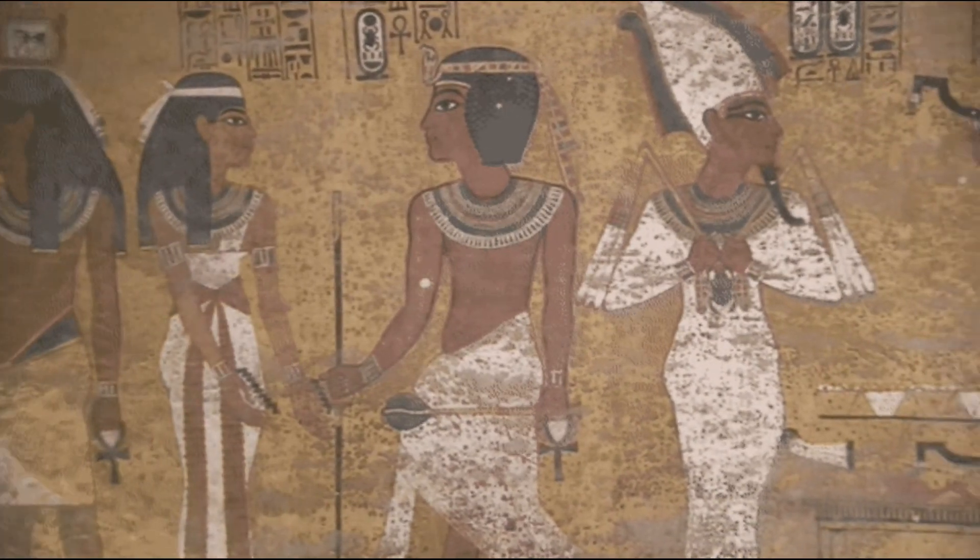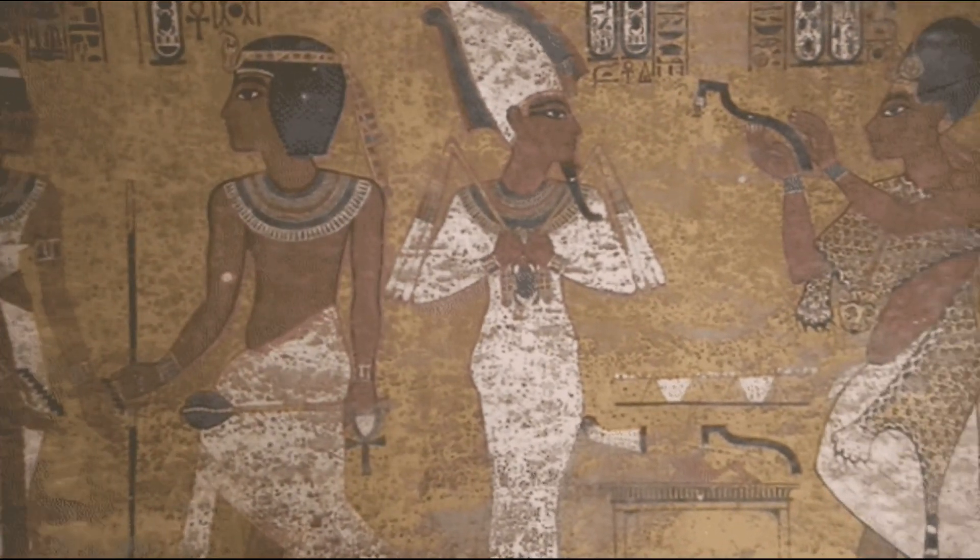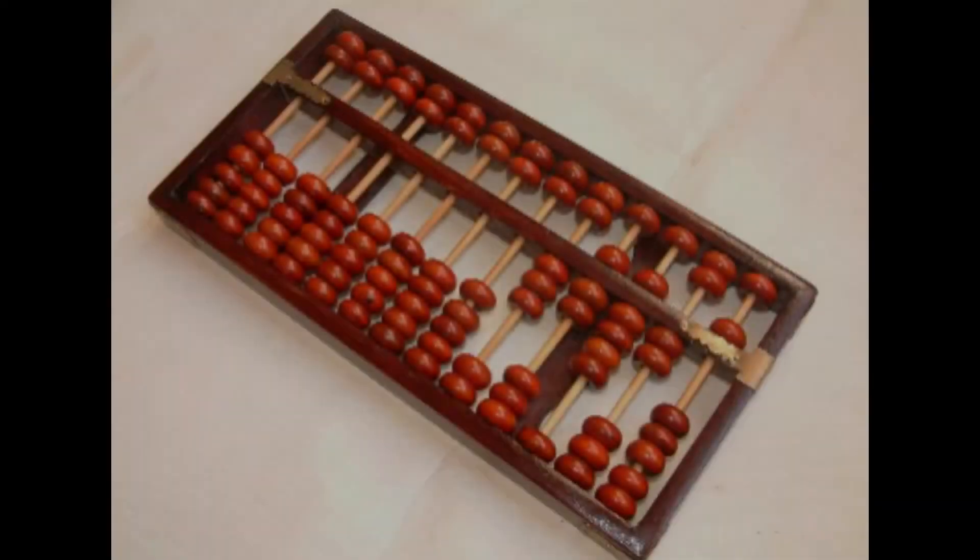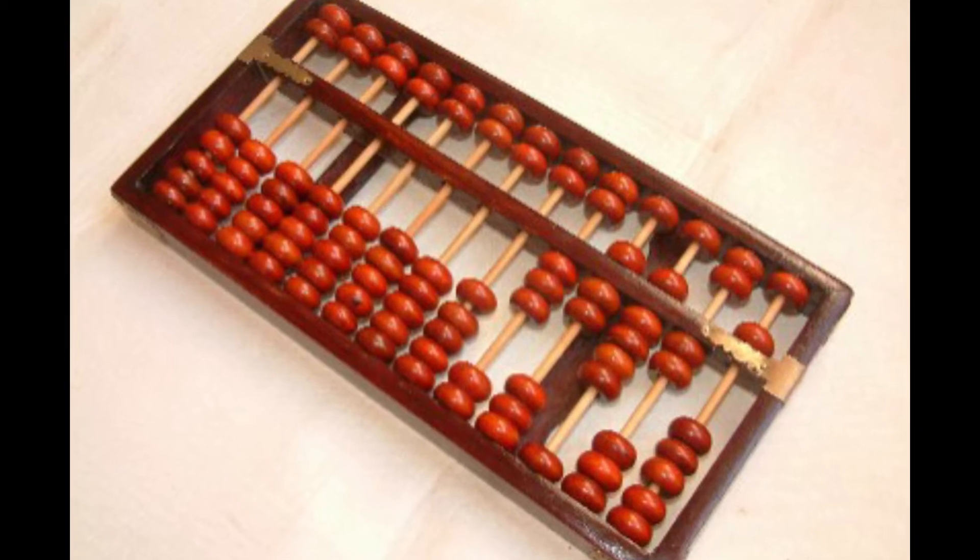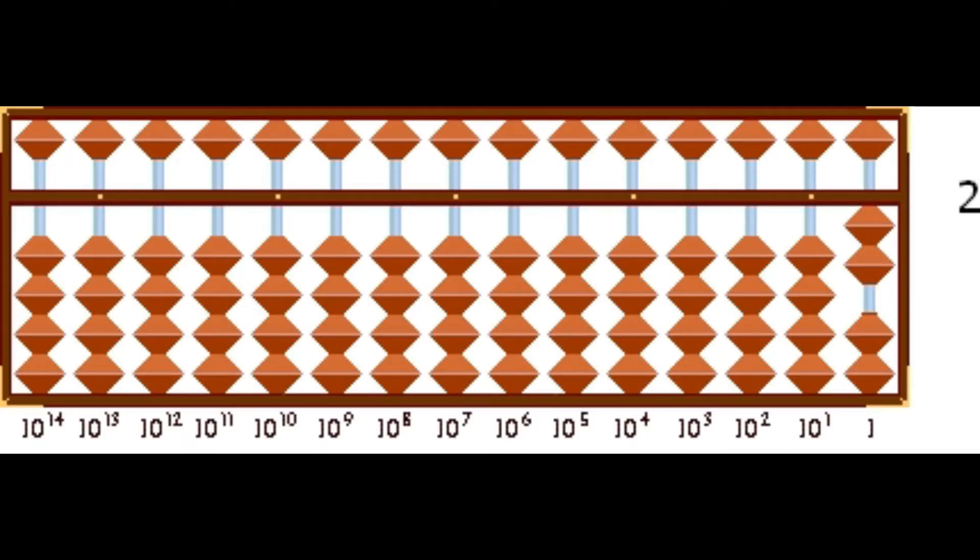Besides the abacus, people used their toes and fingers or stones in the dirt for calculations. These methods were not suitable for long calculations, so an abacus was used at that point in time.